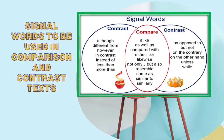Here are the signal words that can be used in comparison and contrast text. Signal words for contrast: although, different from, however, in contrast, instead of, less than, more than, as opposed to, but not, on the contrary, on the other hand, unless, and while.